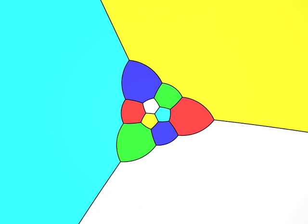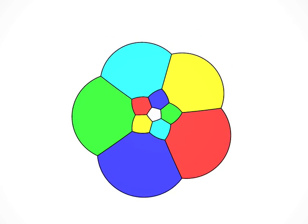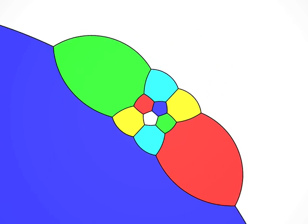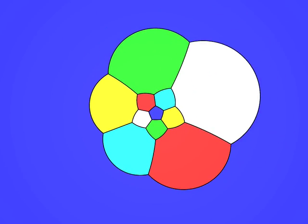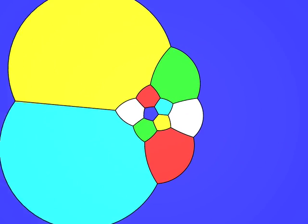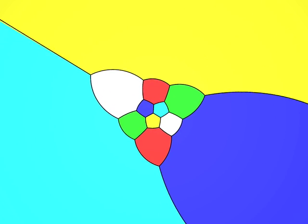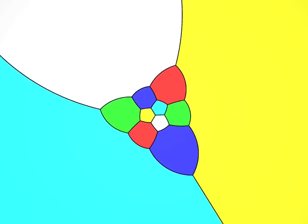Let's look at the dodecahedron. Each face is a pentagon. If we count them, there are 12 faces. Three edges start at each vertex.